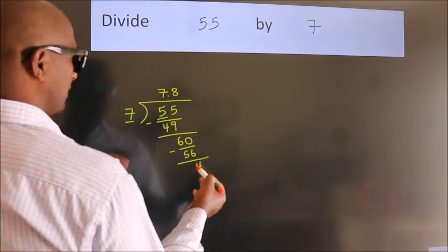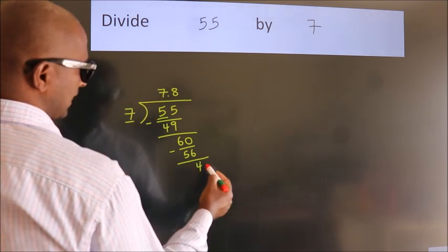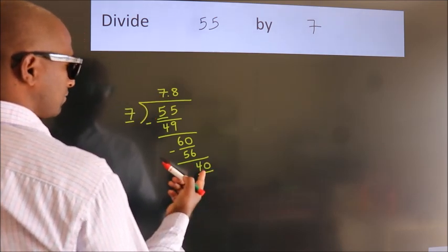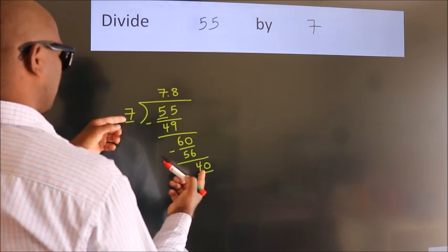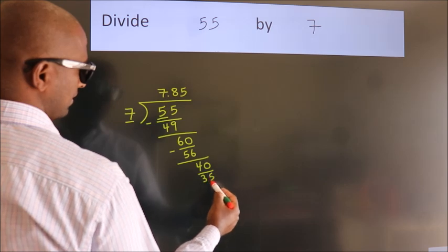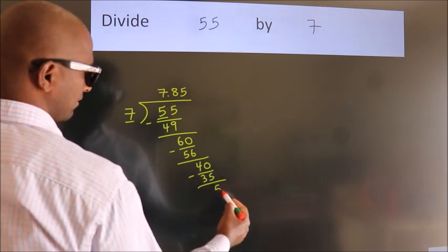After this, we already have the decimal. So, directly take 0. So, 40. A number close to 40 in the 7 table is 7 times 5 equals 35. Now, we subtract. We get 5.